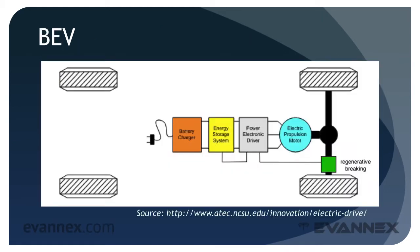For a BEV, electric energy is provided from the grid — no fossil fuels, no ICE, no emissions. The schematic on the screen illustrates the architecture of the battery electric vehicle. Electricity from the grid passes through a charger, shown in orange, and charges the battery in yellow. Energy stored in the battery is passed to control electronics, called a power electronic driver, in gray in this schematic, to moderate the energy transfer to the electric motor, in blue.